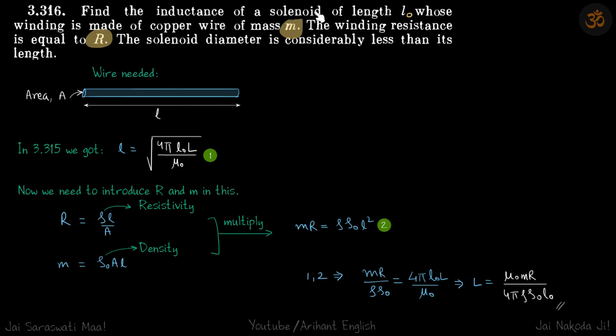Find the inductance of a solenoid of length L0 whose winding is made of copper wire of mass M. Winding resistance is R. The solenoid diameter is less than its length.